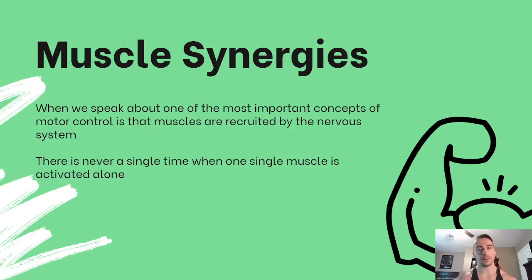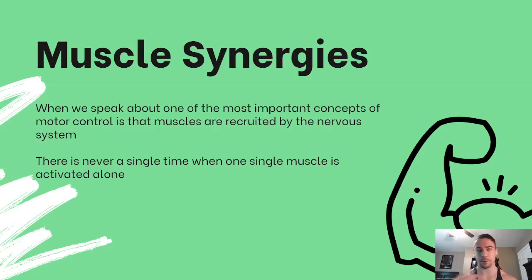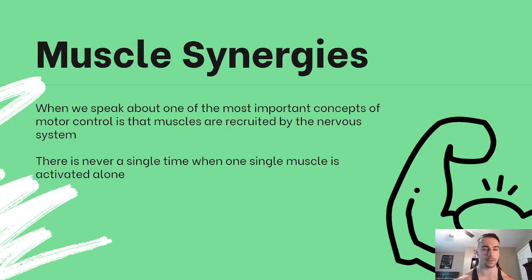When it comes to motor control and motor behavior, there's something important known as muscle synergies. Muscles are recruited by the nervous system — going back to what we discussed about the different systems working together. There is never a single time when one muscle is activated alone; the nervous system is always activating multiple muscles to perform different actions.